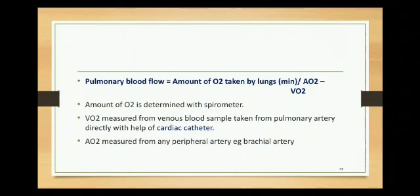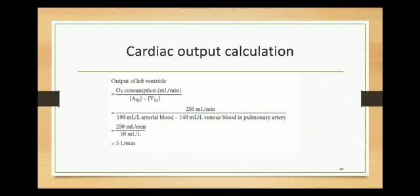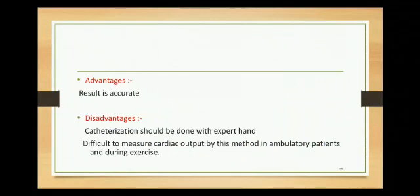The venous oxygen concentration is measured from a blood sample taken from the pulmonary artery using a cardiac catheter, while arterial oxygen concentration is measured from any peripheral artery such as the brachial artery. Example calculation: oxygen consumption 250 mL/min divided by (190 - 140) = 250/50 = 5 liters per minute cardiac output. Advantage: very accurate. Disadvantage: catheterization requires expert technique and it is difficult to measure cardiac output in ambulatory patients or during exercise.